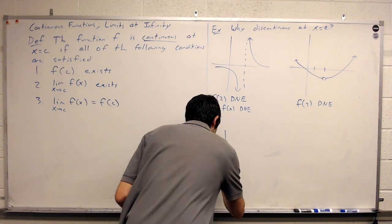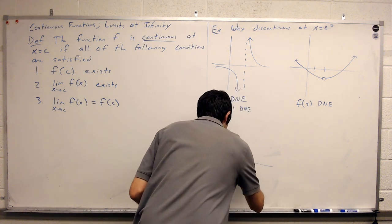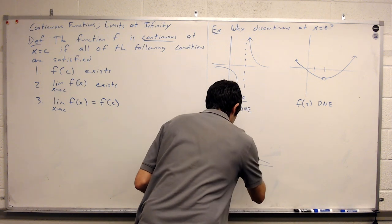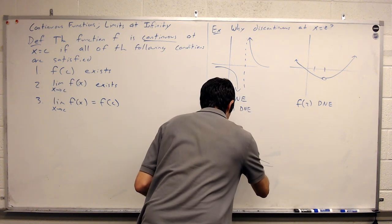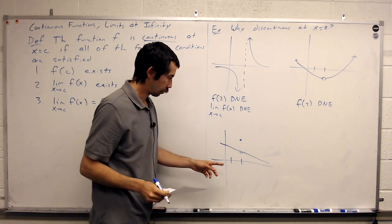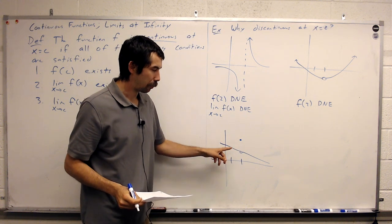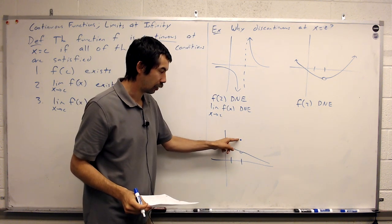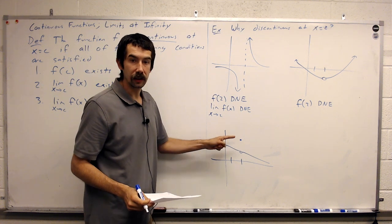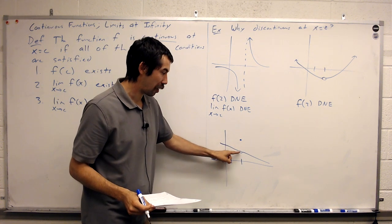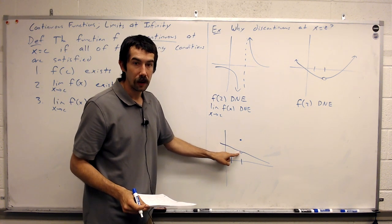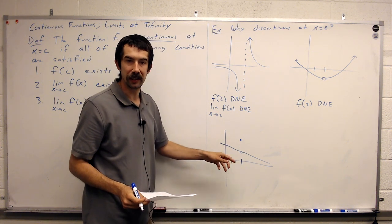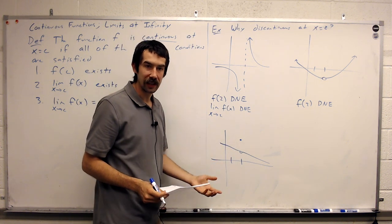And now the last one. In this example, f of 2 exists — it's whatever our y value is here. The limit exists — it's whatever our y value is here. But these two numbers are not the same; these two y values are different. So this fails condition 3.